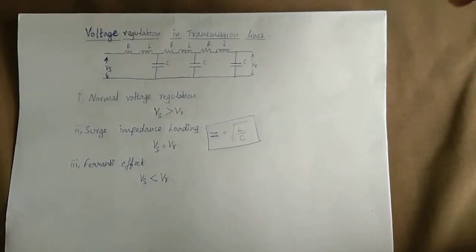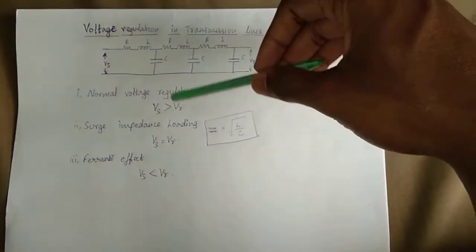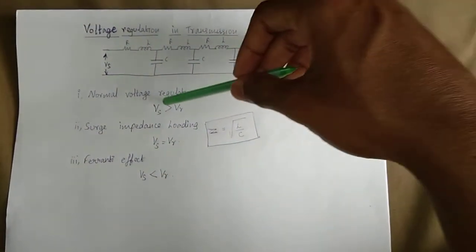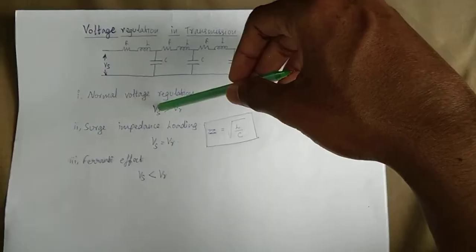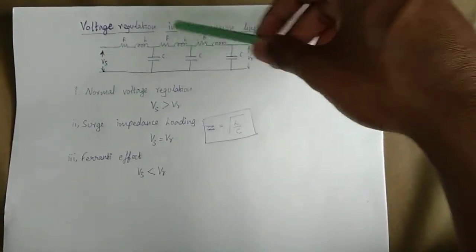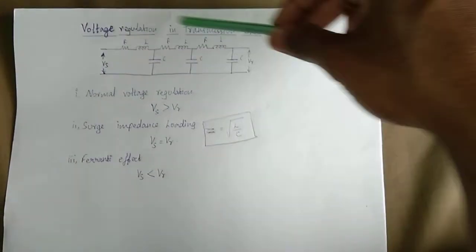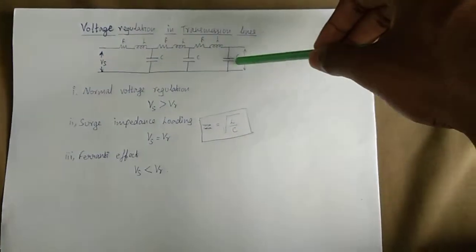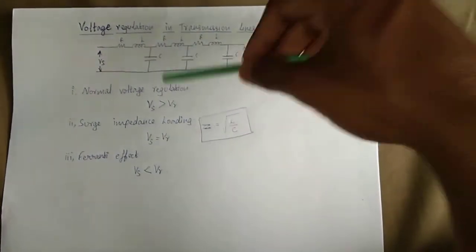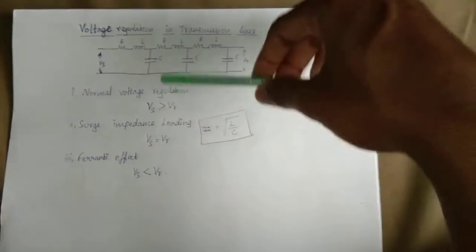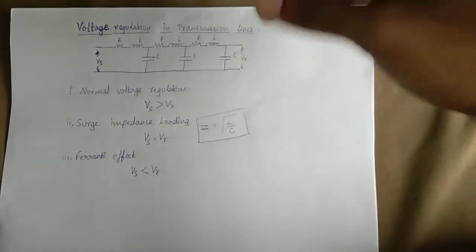So, the Receiving End Voltage is less than that of the Sending End Voltage. This is the Normal Voltage Regulation.